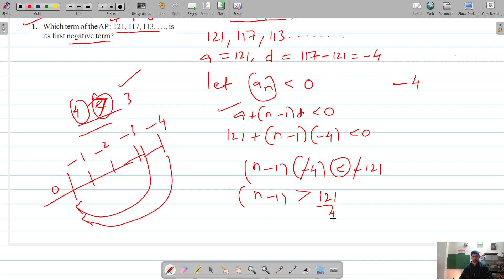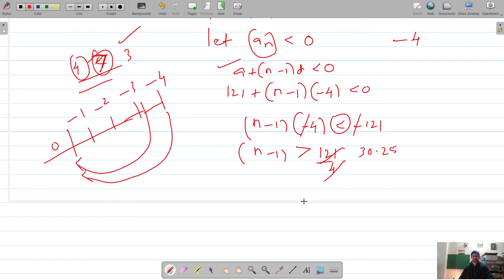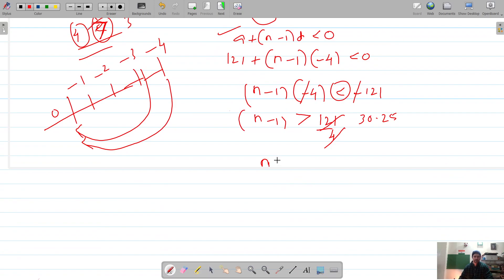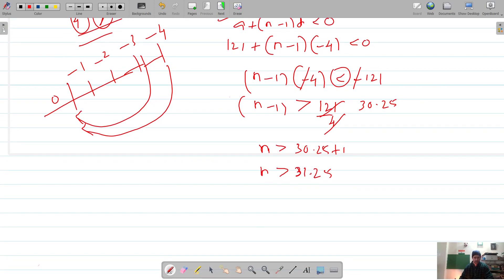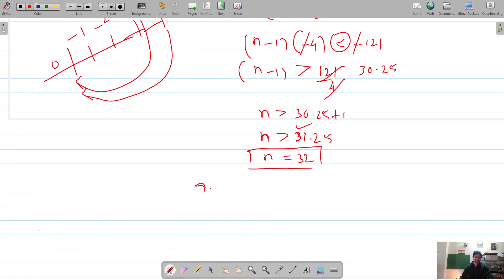121 divided by 4 is 30.25, and n is greater than 30.25 plus 1, so n is greater than 31.25. We know an integer that's greater than 31.25 is 32, so our first negative term is the 32nd term.